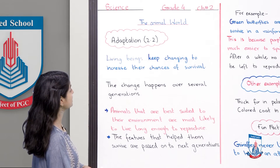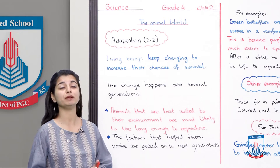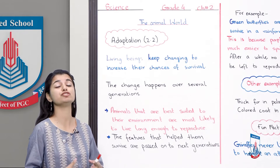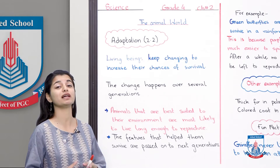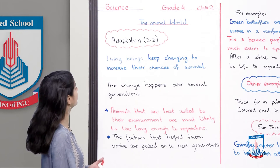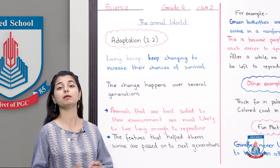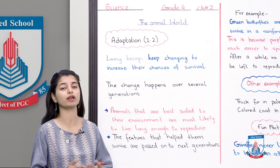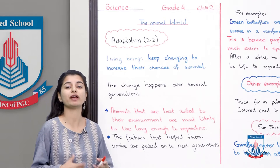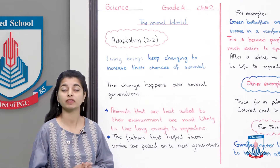Living beings keep changing to increase their chances of survival. Adaptation is basically this: living beings change to suit their environment so that they can survive and live. The change happens over several generations. It is not that someone can instantly change their body — if the environment is very cold, a being cannot just suddenly grow thick fur. That is not possible.